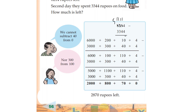Now we have 11 minus 6 equal to 5. Then we have 11 minus 4 is 10, 9, 8, 7. 11 minus 11 is equal to 5.